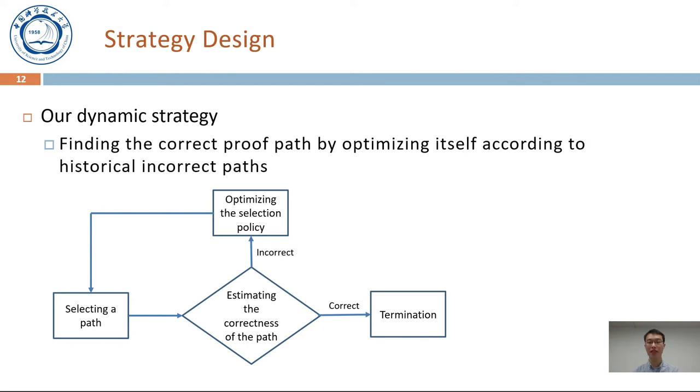Based on the previous definition, we present our strategy design. Our dynamic strategy is finding the correct proof path by optimizing itself according to historical incorrect paths. Initially, it uses a purely random strategy to select a path, and then estimates the correctness of the path. If it is correct, the strategy terminates. Otherwise, it optimizes the selection policy using reinforcement learning and reselects a path.